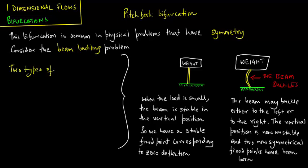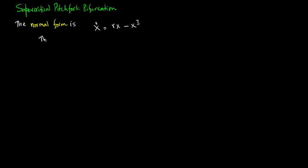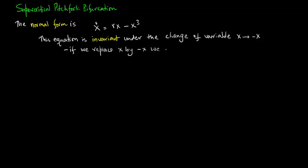There are two types of pitchfork bifurcations. One is supercritical and the other is subcritical. We now consider a supercritical pitchfork bifurcation. The normal form is x dot equals rx minus x cubed. This equation is invariant under the change of variable x to minus x.